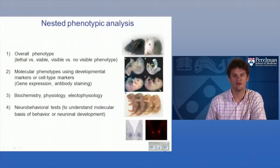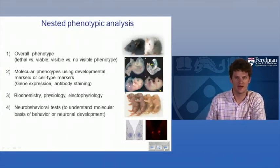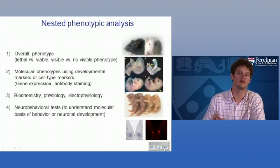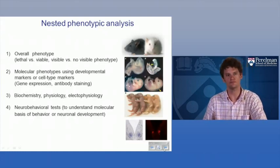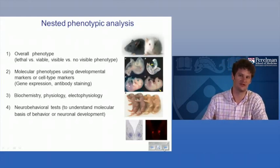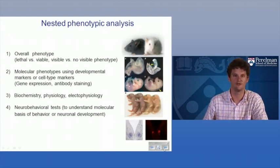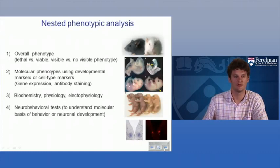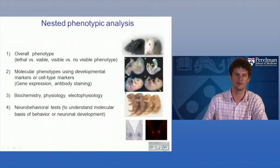If you're going to do a screen in mouse, unlike in worms where you try to find the most specific phenotype for the process you're interested in, in mouse you want as rich a screen as possible given the cost. This is where nested phenotypic analysis comes in: start with a fairly general phenotype you can apply cost-effectively to your whole population, then when you identify mutants, go and do more detailed phenotyping on subsets.